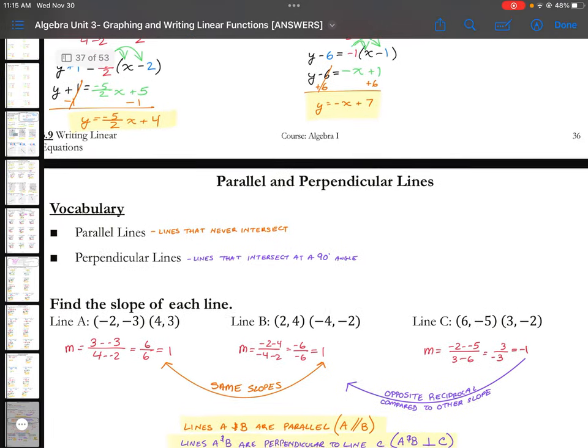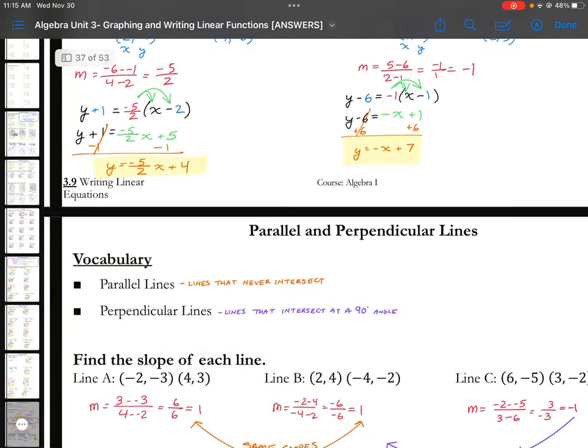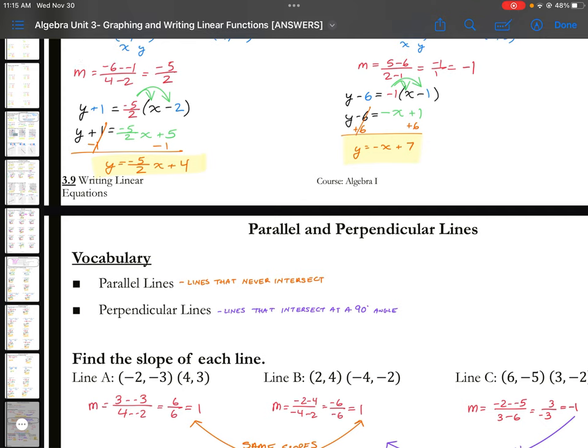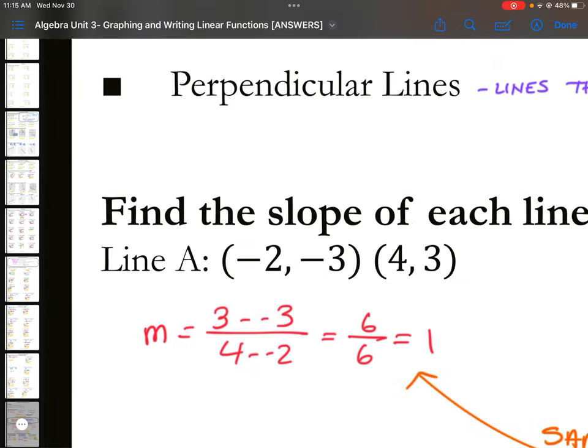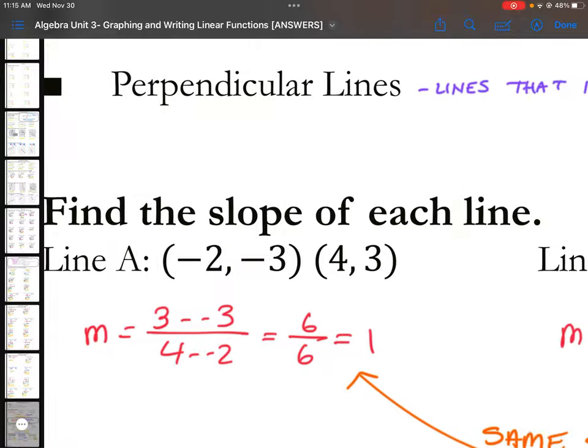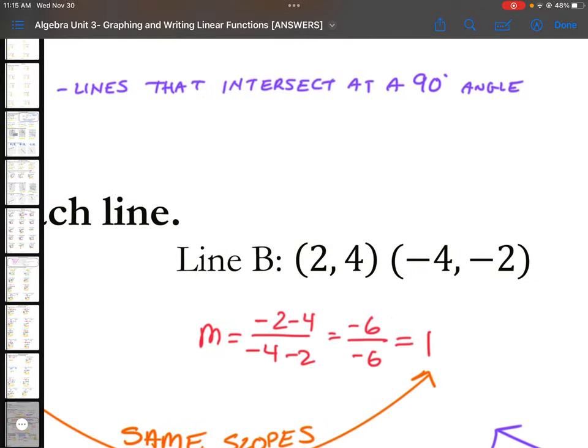Here are the answers below. If you notice, line A has a slope of 1. Line B also has a slope of 1.